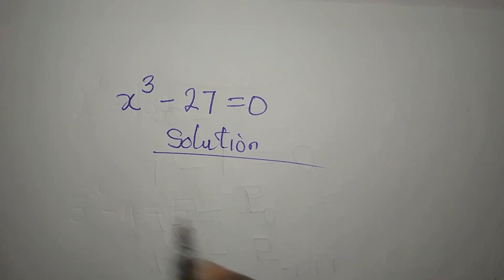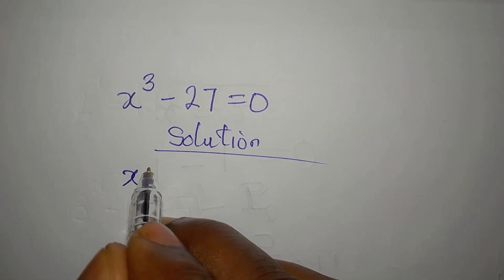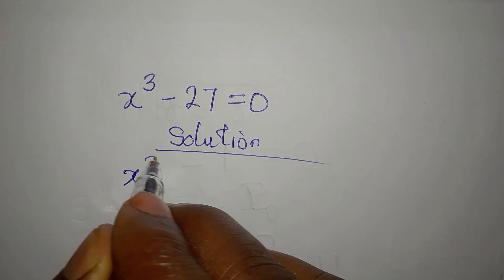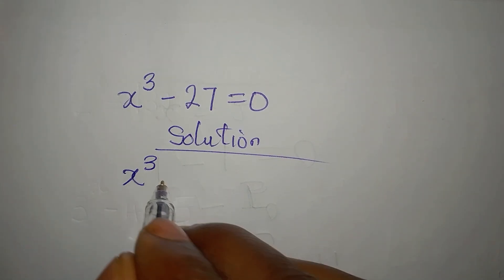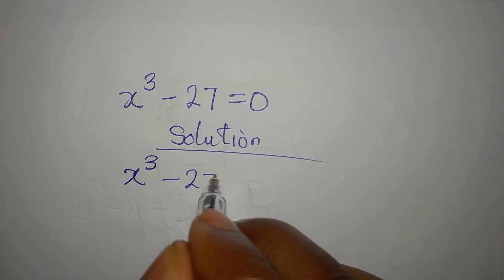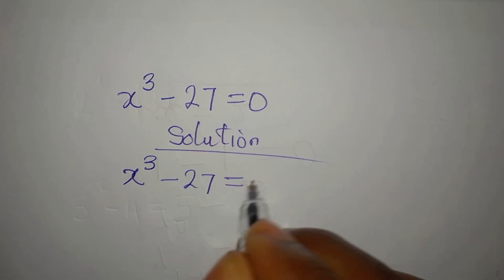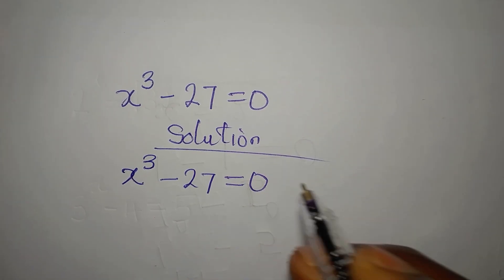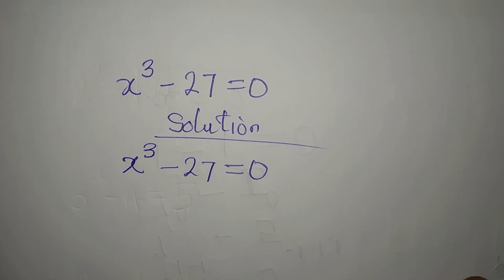Hi everyone, let's solve this very quickly. x to the power of 3 minus 27 equals 0, and we are expected to get the 3 solutions here.